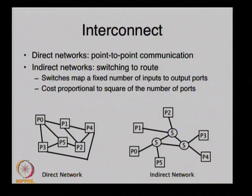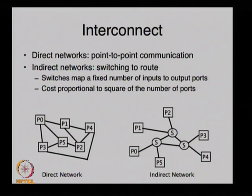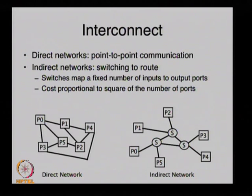Now we are going to talk about interconnects — the types that have been or are in common usage. In general we divide them into two categories. One is the direct connection, where a port has a wire directly connected to another port to which another processor is connected. The picture on the left shows P0 is connected to P1, but P5 is not connected to P2 — so P0 cannot send data to P2 unless there is a forwarding protocol. As far as the instruction set is concerned, you have specific addresses to which you can send a piece of data.